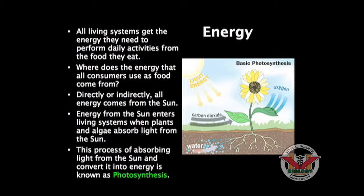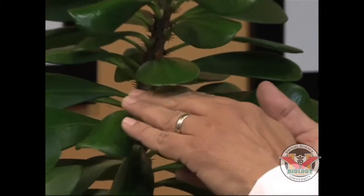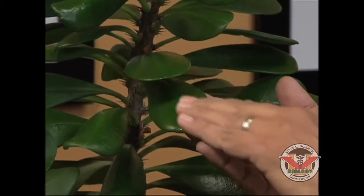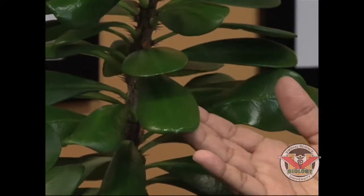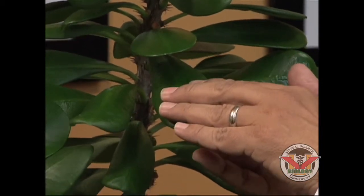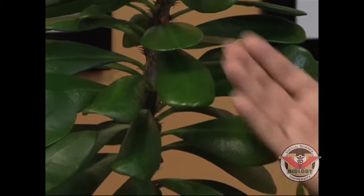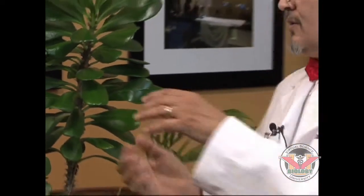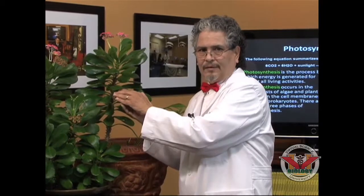This process of absorbing light and converting it into energy is known as photosynthesis. You can see that very vividly right here with this plant. The green pigment here, the chlorophyll, is basic evidence that this plant has undergone and is undergoing photosynthesis. That's why it's big and enlarged, and there's a lot of energy that's captured in here from the process of photosynthesis that has taken place.